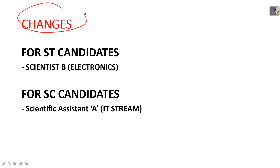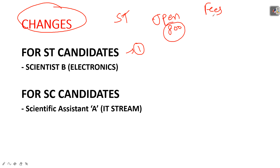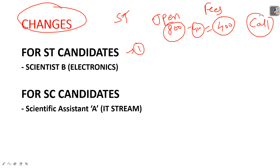Very important changes for SC and ST candidates: ST candidates from Electronics already have one reserved post. Those who applied in the Open category in December will now automatically be considered in their ST category. However, they had paid 800 rupees at that time, whereas the ST fee is 400 rupees. So ideally they should get a refund of 400 rupees, but this is not written anywhere. Call the helpdesk and ask for the refund.